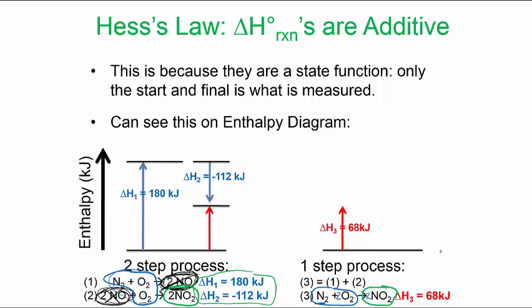You could actually add those together. So this number is from, this number is from 180 plus a negative 112. And that's Hess's law.